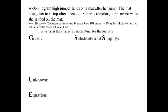A 60 kilogram high jumper lands on a mat after her jump. The mat brings her to a stop after one second. She is traveling at 5 meters per second when she's landed on the mat. Now this is a little bit confusing so I'm going to draw a little picture, a diagram.